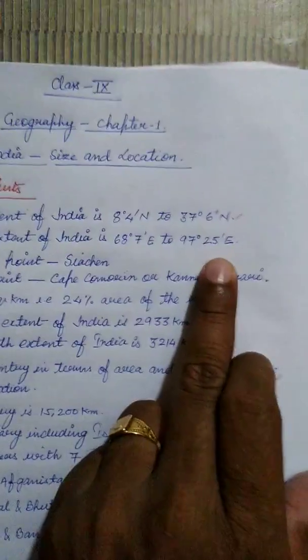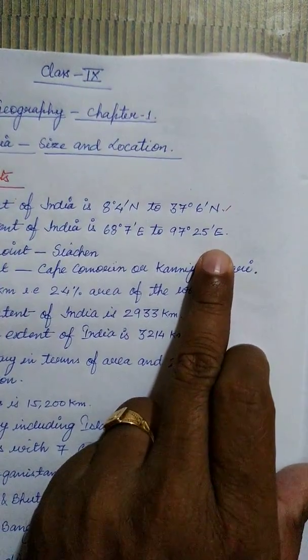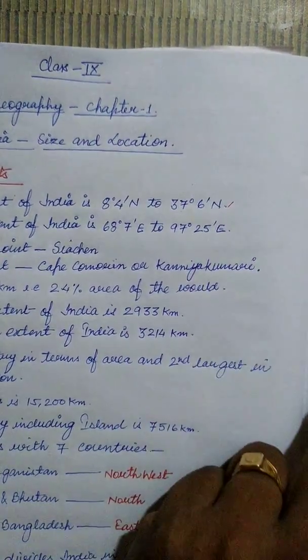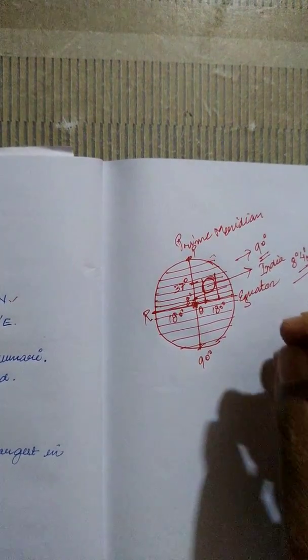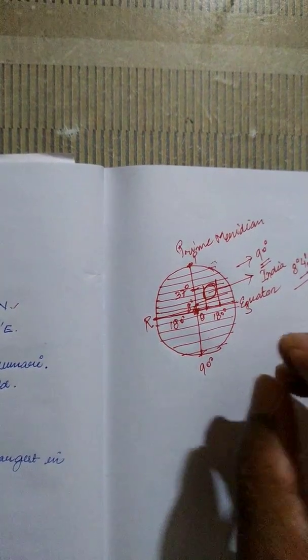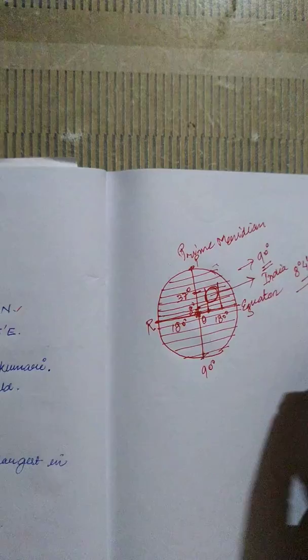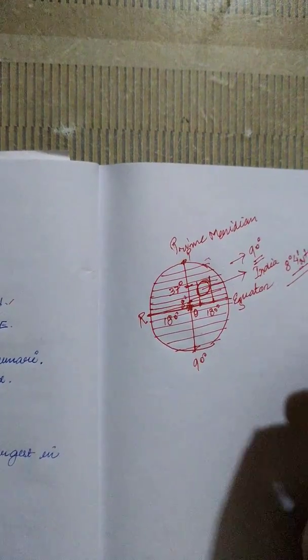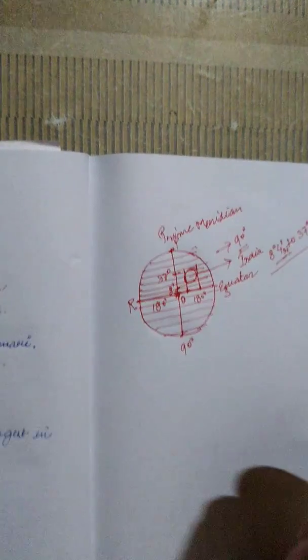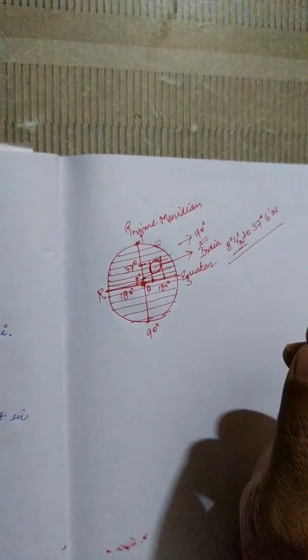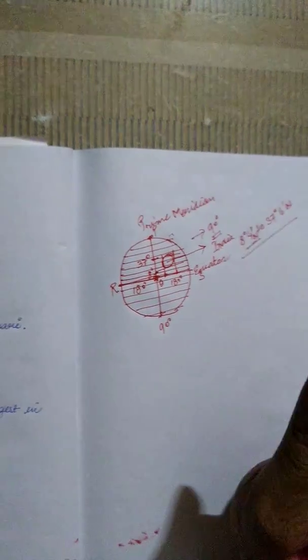India lies from 68 degrees 7 minutes east to 97 degrees 25 minutes east. From this latitude and longitude we can find the location of India.